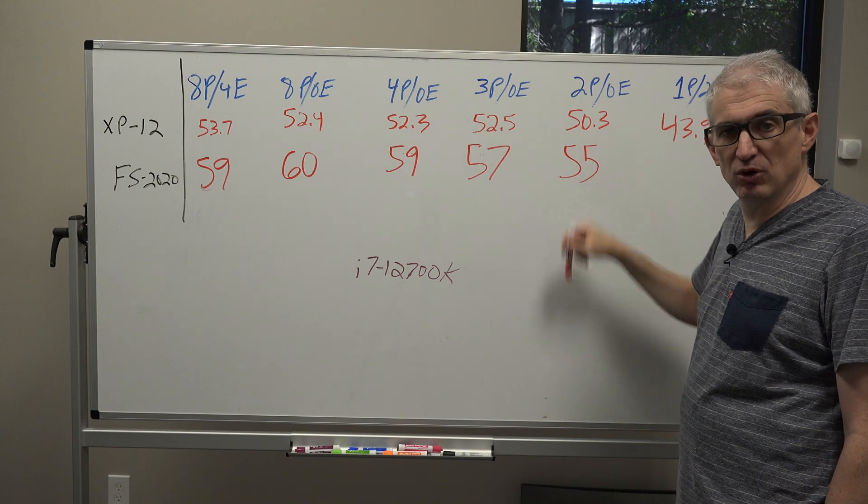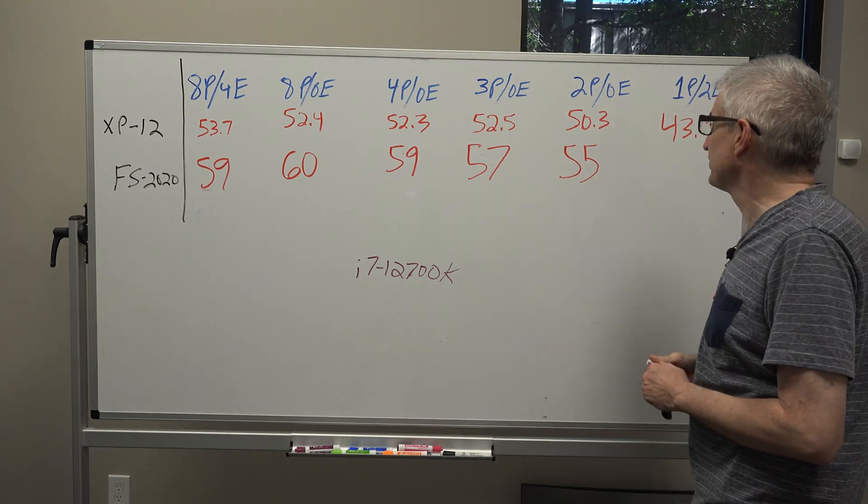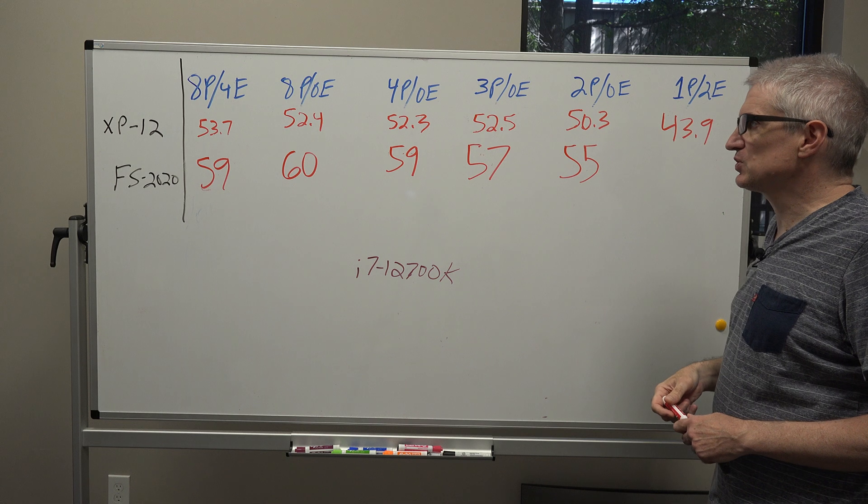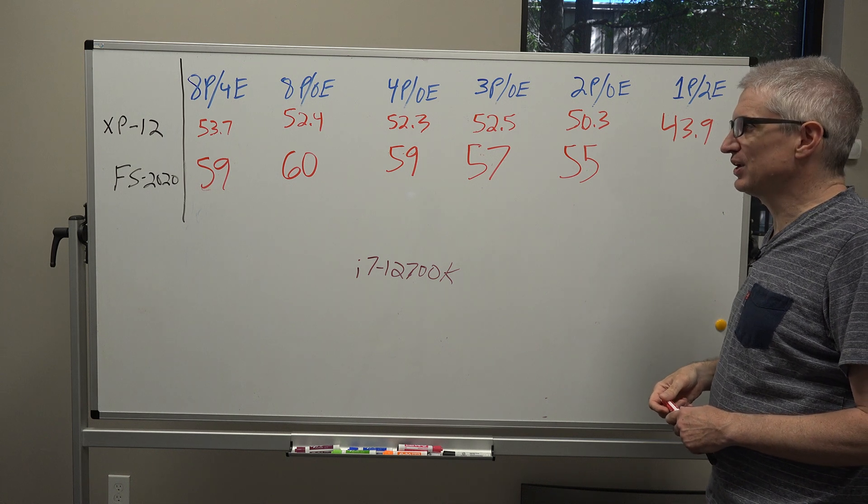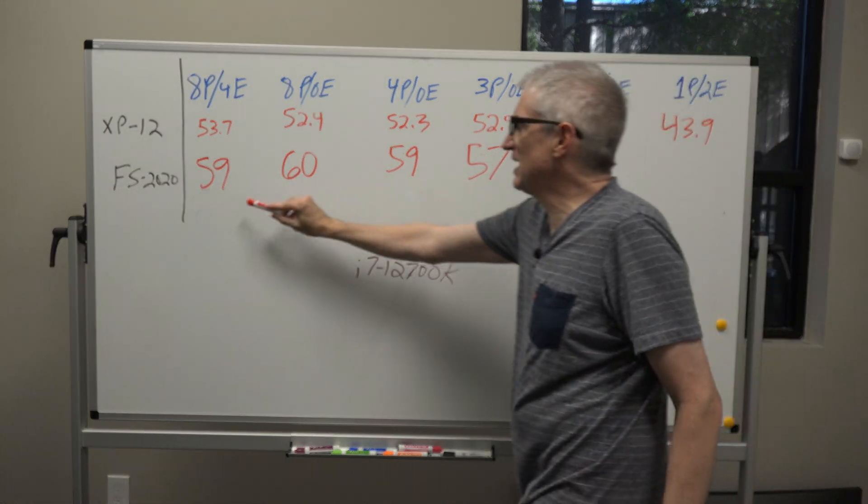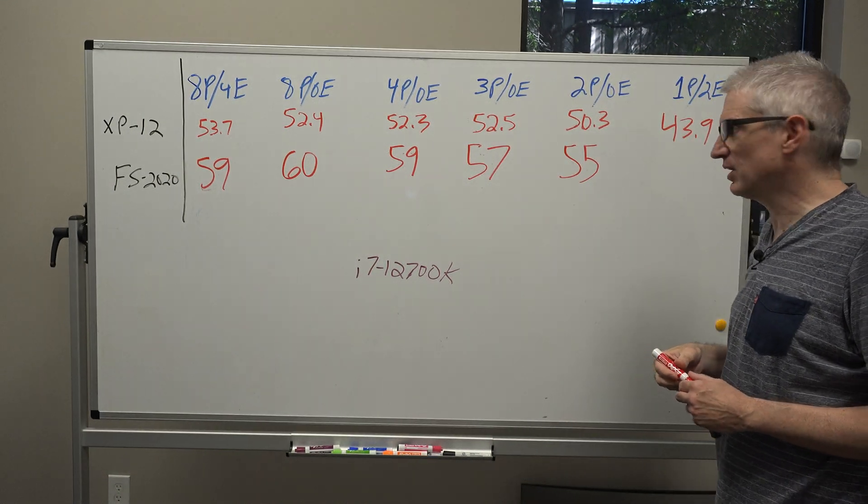But yet the only difference between eight core and dual core is the difference between 55 and 59, not really anything you can notice with your eye.